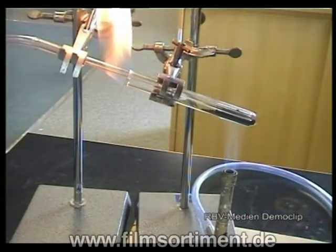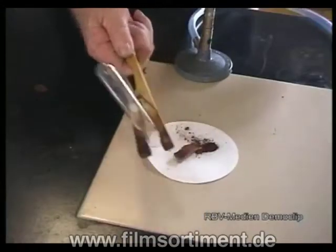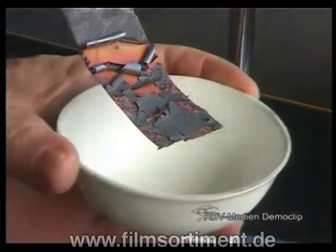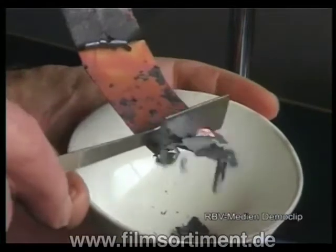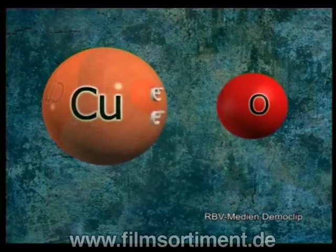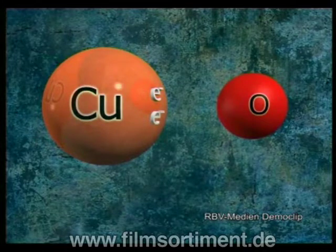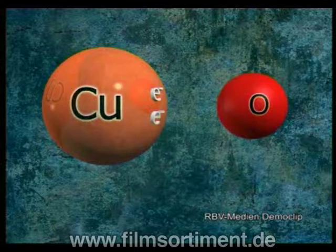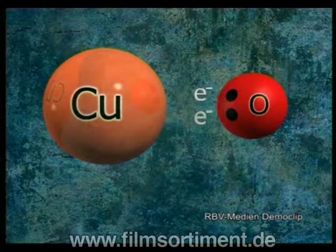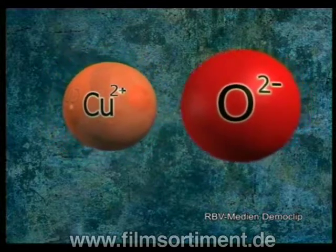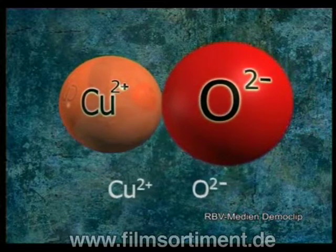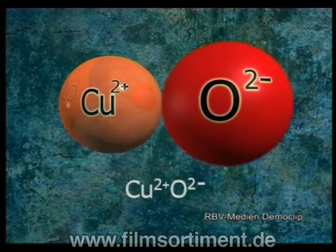Die wichtigsten chemischen Reaktionen in der Metallgewinnung sind Oxidation und Reduktion. Wir betrachten diese Reaktion etwas genauer und beginnen mit der Oxidation dieses Kupferstreifens. Ein Kupferatom besitzt zwei Elektronen in der Außen- oder Valenzschale, die leicht abgegeben werden können. Sauerstoff dagegen benötigt zwei Elektronen. Nach einem kurzen Hin und Her nimmt das Sauerstoffatom die beiden Kupferelektronen auf. Mit diesem Elektronenübergang gehen beide Atome eine Bindung ein und verändern sich zu elektrisch geladenen Ionen. Man sagt auch: Kupfer wurde oxidiert und Sauerstoff reduziert.